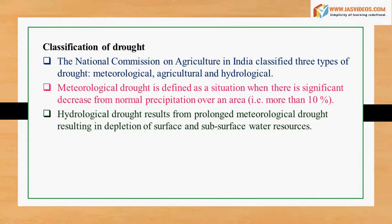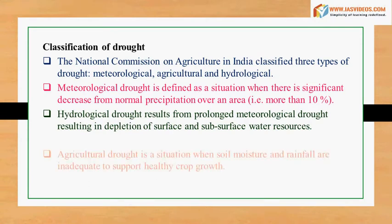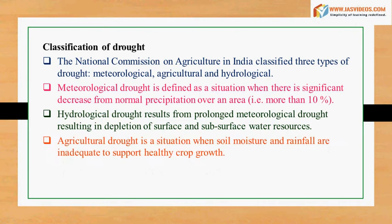Hydrological drought results from prolonged meteorological drought, resulting in depletion of surface and subsurface water resources. Agricultural drought is a situation when soil moisture and rainfall are inadequate to support healthy crop growth.